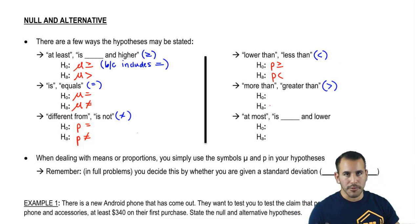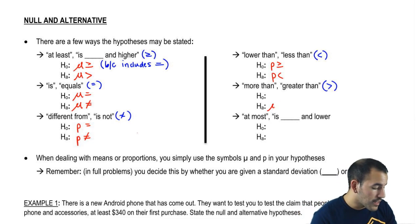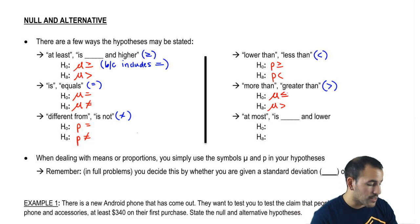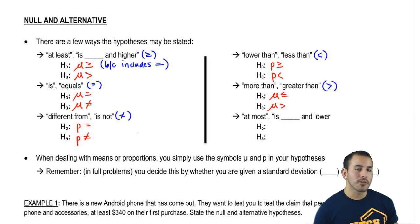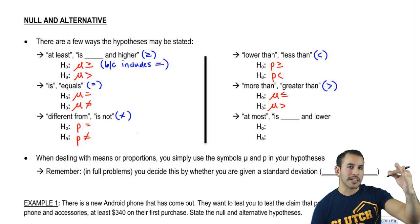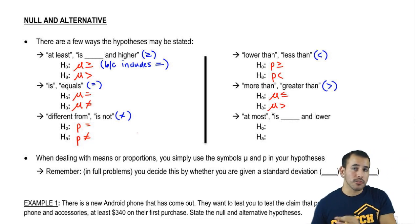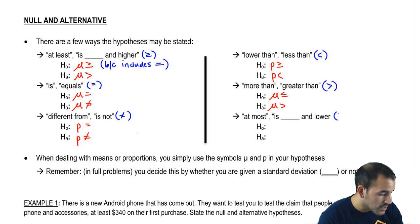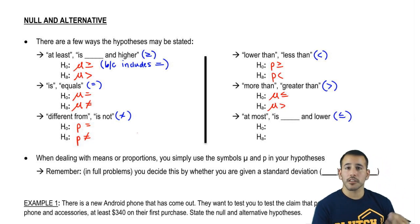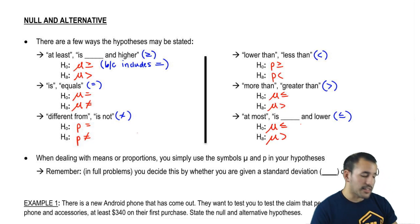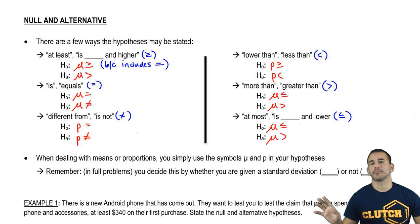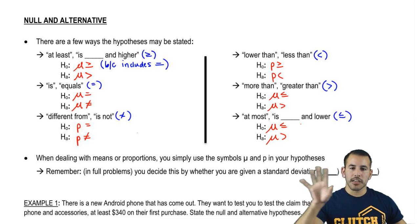Let's go back to means. The mean weight is greater than 100 — since it doesn't include an equal sign, we're going to put it on the alternate, and the null is going to be the exact opposite. Last one: 'at most.' At most is the maximum point and everything up to it, but it also includes that maximum point. So 'at most' is less than or equal to. Since it includes an equal sign, it falls under the null, and the alternate is going to be the exact opposite.